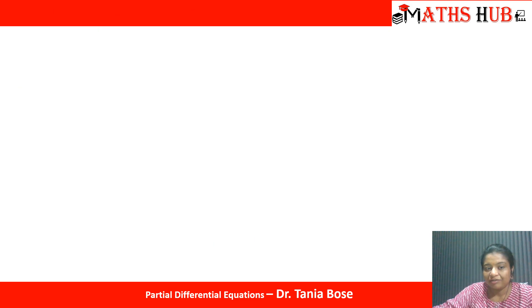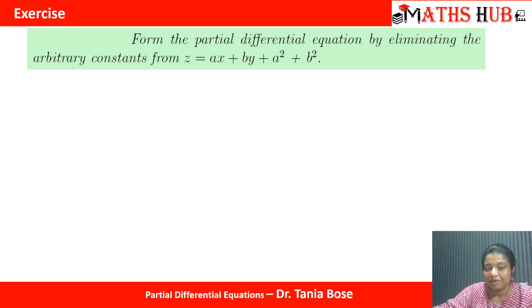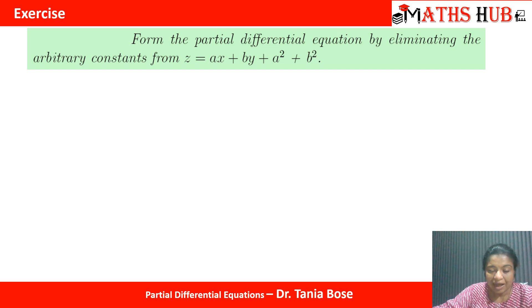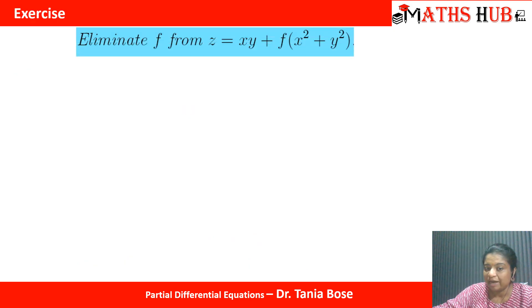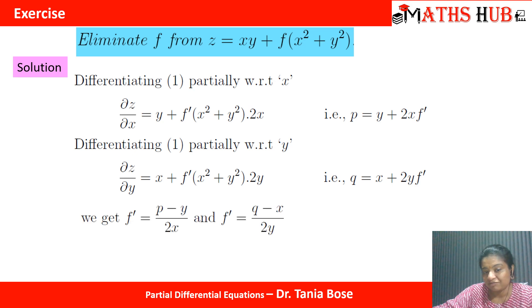Now try these practice questions: first, form a PDE by eliminating the arbitrary constants from z = ax + by + a² + b², where you must eliminate both a and b. Second, eliminate the arbitrary function from z = xy + f(x² + y²). Try these on your own and let me know in the comment section if there is any difficulty.